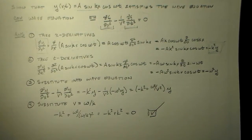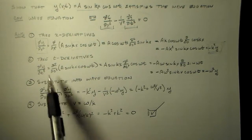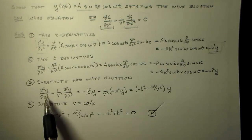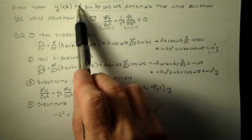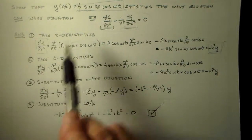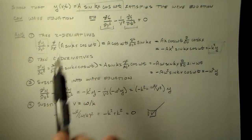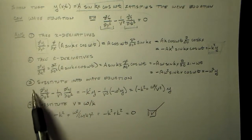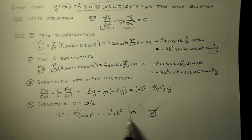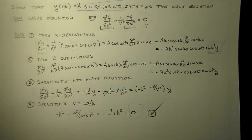And we've shown what we intended to show, which is that this function, a sine kx cosine omega t, when substituted into the wave equation, gives you zero. So it satisfies this relationship here, which is what makes it a wave in the first place.